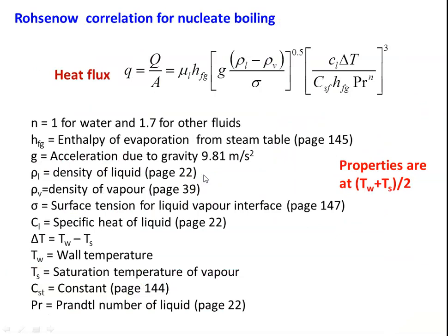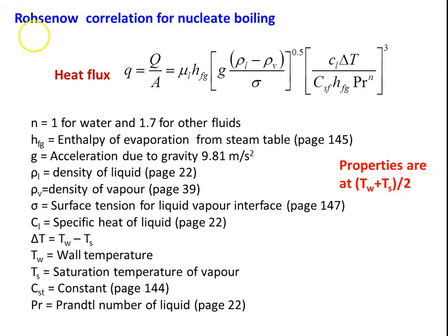The correlation for nucleate boiling between A and C is: heat flux q/A = μ_L · h_fg · [g(ρ_L − ρ_V)/σ]^0.5 · [C_L · ΔT / (C_sf · h_fg · Pr^N)]^3. This is an experimentally developed correlation — there is no mathematical derivation. The researcher conducted experiments repeatedly and derived this equation based on experimental results.